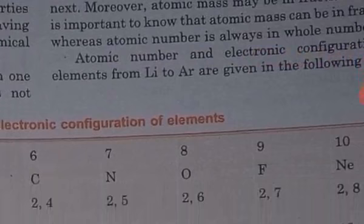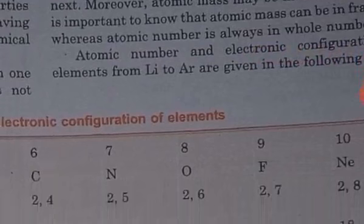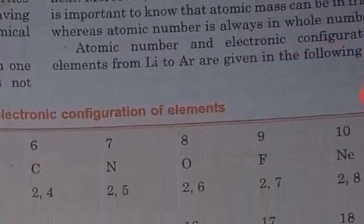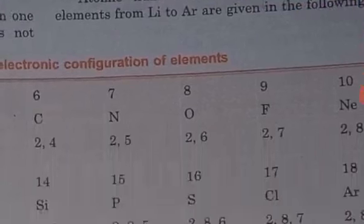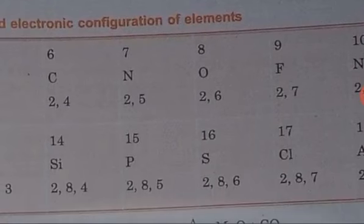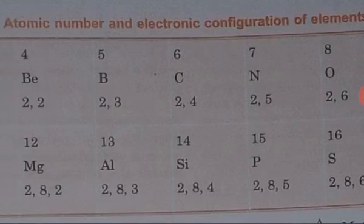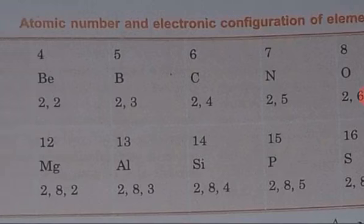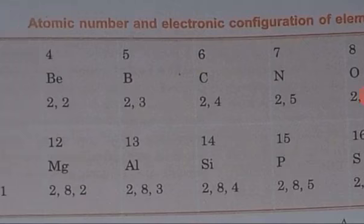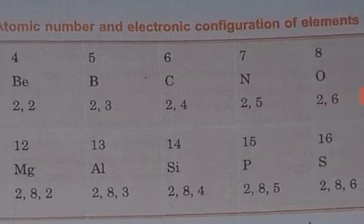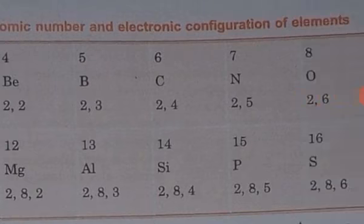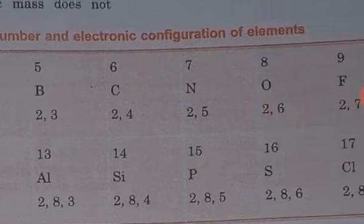Elements having similar electronic configuration have similar chemical properties. The original periodic table was modified on the basis of the modern periodic law, and a new group — Group 0 — was added for inert gases, and the position of the rare earth and the actinide elements was also given.